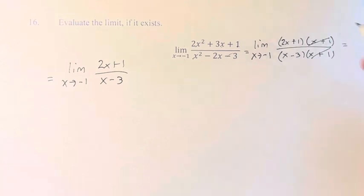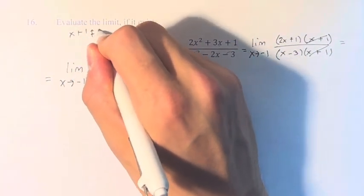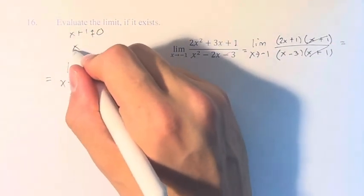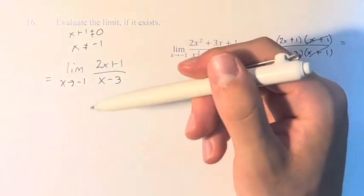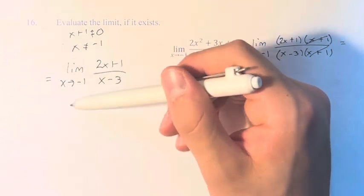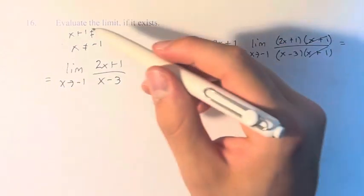This is with the caveat that x plus 1 cannot equal 0. This is a domain restriction we lose by crossing these out, and therefore x cannot equal negative 1. But since the limit is not looking at what happens at negative 1, but only at the values as we approach negative 1, then we don't even have to consider this.